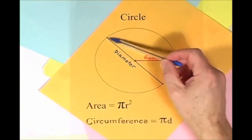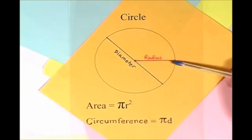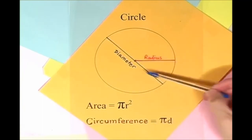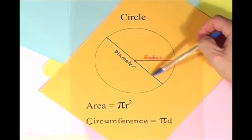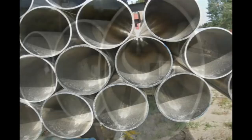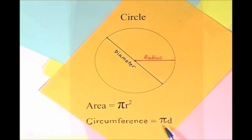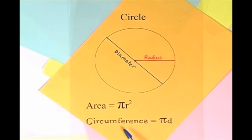Here is a circle, it knows how to get around. It has a radius from center to rim. And its diameter's a line that goes from side to side while passing through the center, now isn't that simple. Pi r squared sounds like area to me, when I need a circumference, I'll just use pi d.